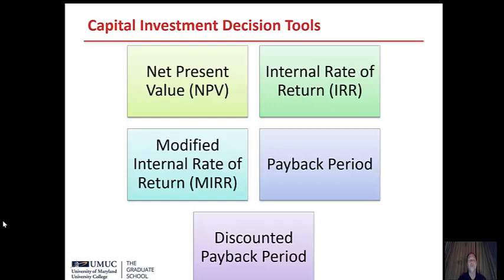These include things like net present value, which will be in dollars or whatever currency the company is looking at; internal rate of return, which will be in percent; modified internal rate of return, which will also be in percent; payback period, which could be in years; and discounted payback period.